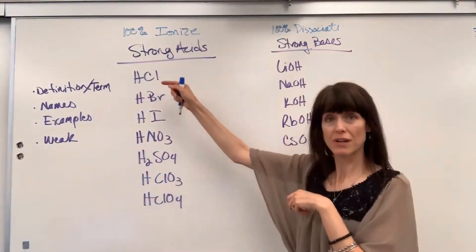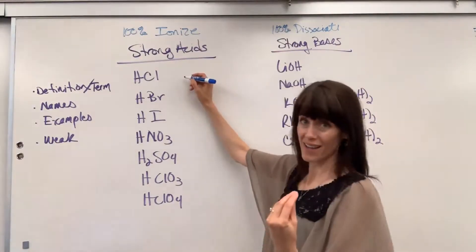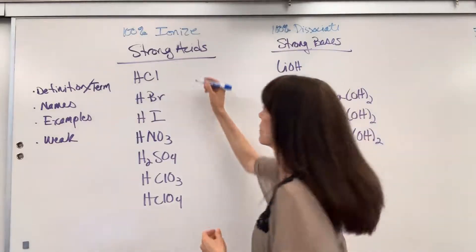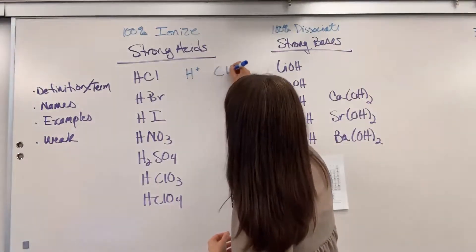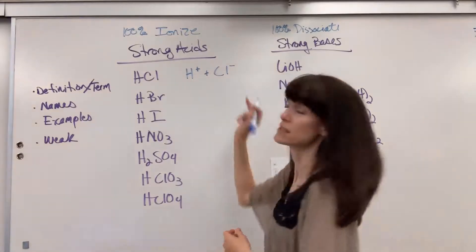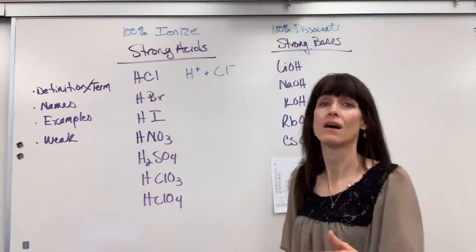For example, our hydrochloric acid is going to ionize and when it completely breaks apart, 100% ionizes, it will be an H plus and a Cl minus. They become ions.